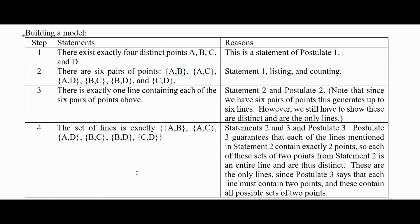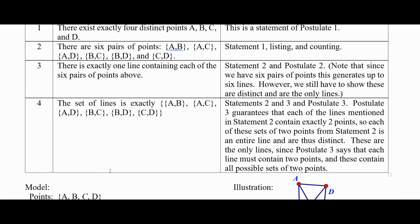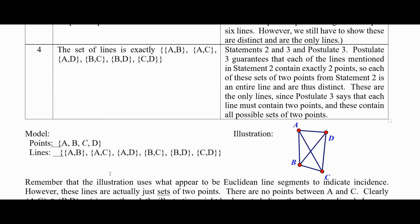And these are the entire ones because the line must contain two points. That eliminates the possibility of a line containing just one point or more than two. These are the only possible sets of two points. So here's your model. The set of points is the set containing A, B, C, and D. The lines are these six sets there.